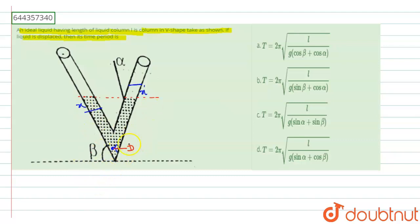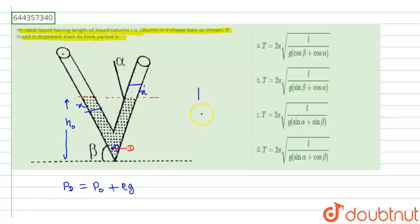Writing the pressure at point D from both arms: P_D equals P_atmosphere plus ρ_liquid × g × H, where the initial height is H_naught. When displaced by X, using the triangle formed with angle beta, the vertical component is X sinβ. So the height on this side becomes H_naught minus X sinβ.